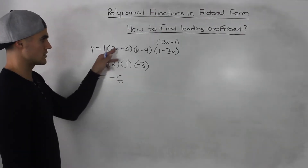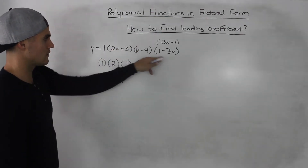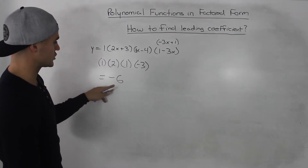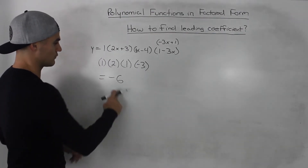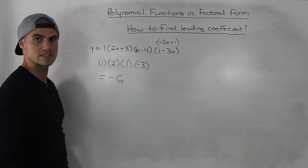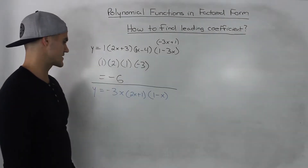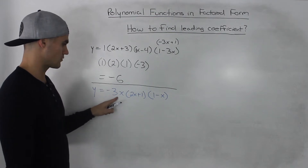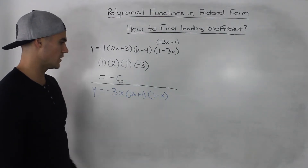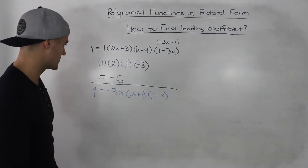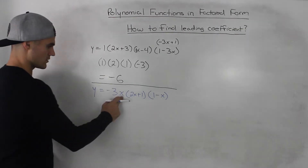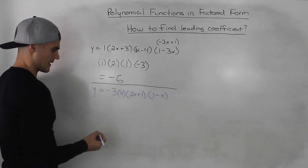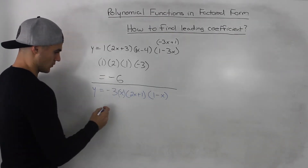So if you were to expand these three brackets, then the leading coefficient in the expanded form would be negative 6. Next example: we've got y is equal to negative 3x, times 2x plus 1, times 1 minus x. This x here — let's put it in its own bracket.